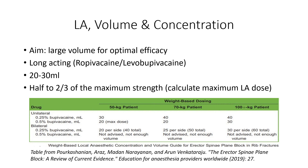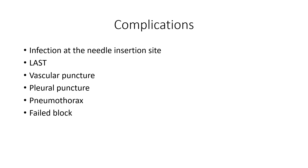The ESP block is also a fascial plane block, so a large volume is needed — minimum 20 ml. Based on a table from 49 cases by Leuk-Pik et al., whether unilateral or bilateral, the key principle is not to exceed the maximum LA dose, with 20 ml as the minimum required volume. The ESP block is quite far from central structures, so complications are rare, but patients should still be counselled about potential risks.